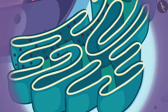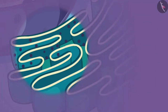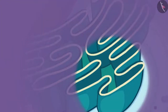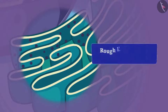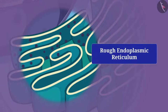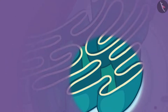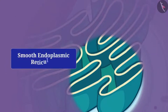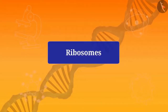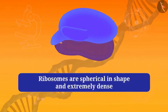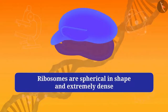If you look at the endoplasmic reticulum carefully under the microscope, you can see a difference in its structure — somewhere there are black dots while in other parts they are absent. The endoplasmic reticulum that has black dots is called rough endoplasmic reticulum, and the one without dots is called smooth endoplasmic reticulum. These black dots are called ribosomes, which are spherical in shape and extremely dense.